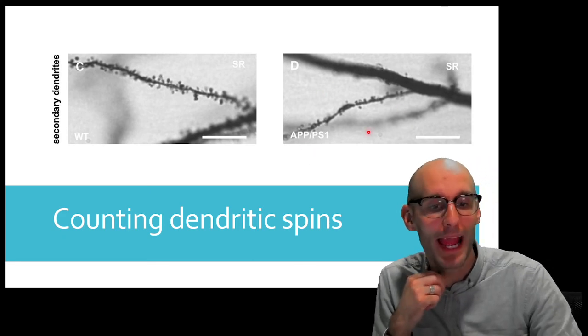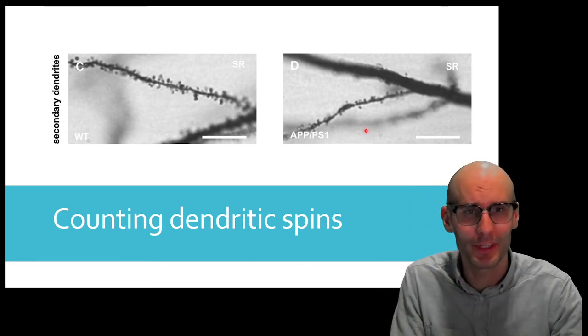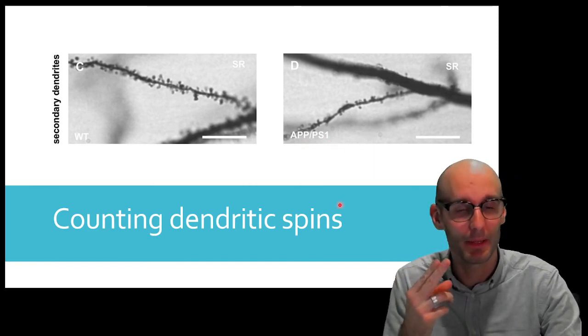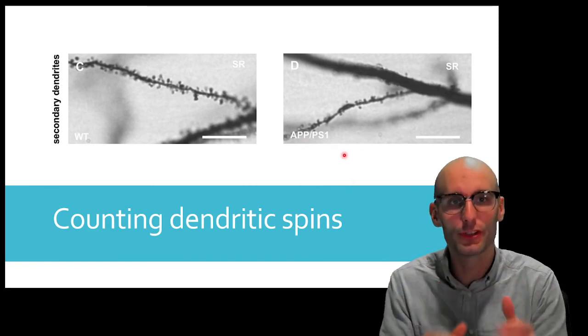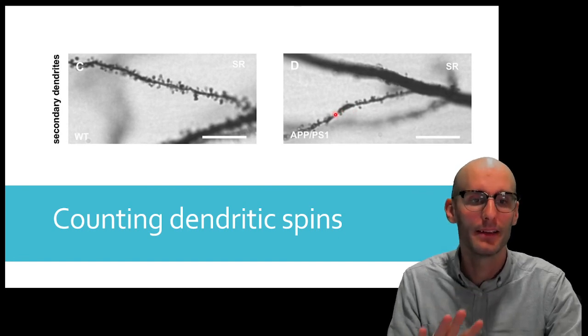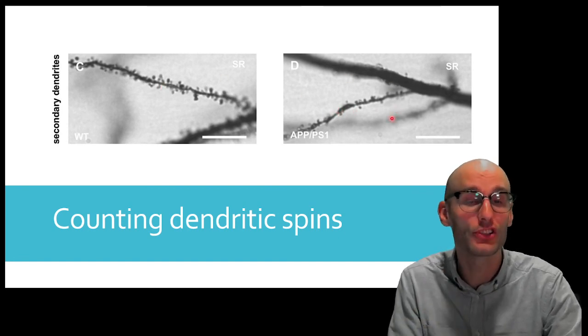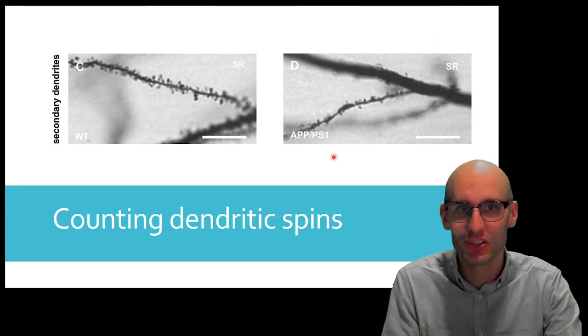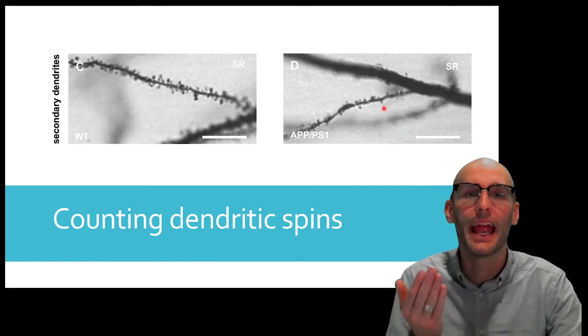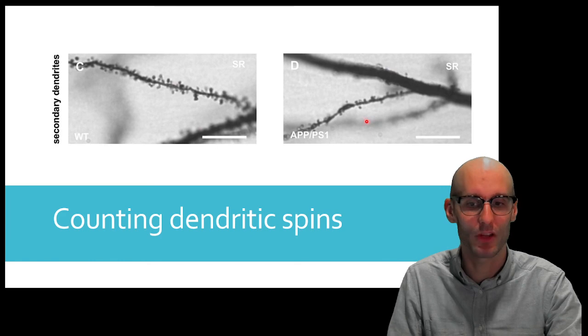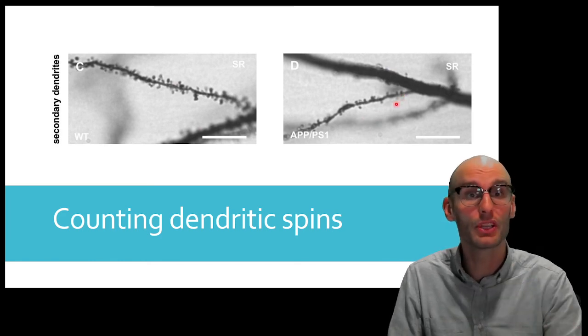Now, this is an Alzheimer's mouse. It's had a gene that causes Alzheimer's disease. And humans inserted into it. Two genes, actually. The APP and the PS1 gene have been inserted into this mouse to cause Alzheimer's disease. And when we go along and want to count the dendritic spines, what do we see? Way fewer dendritic spines. So, it has lost neuronal connection in this. And that's going to cause neuronal dysfunction, reduced cognitive powers, and loss of memory. This was actually done in the hippocampus, which is the memory centers of the brain.